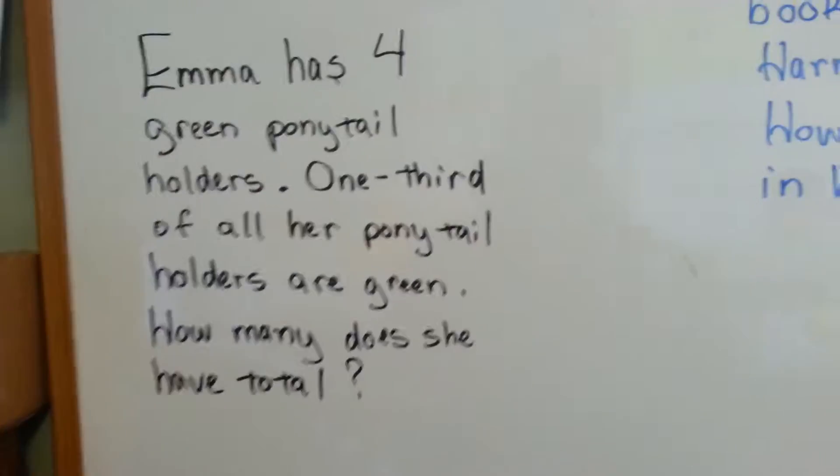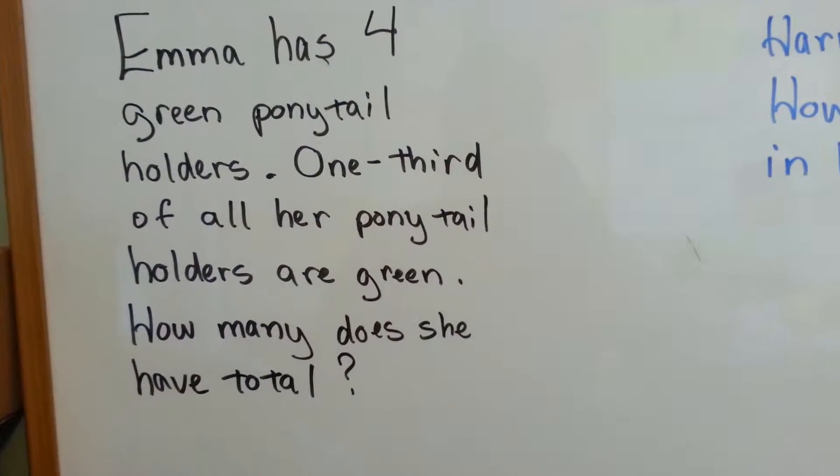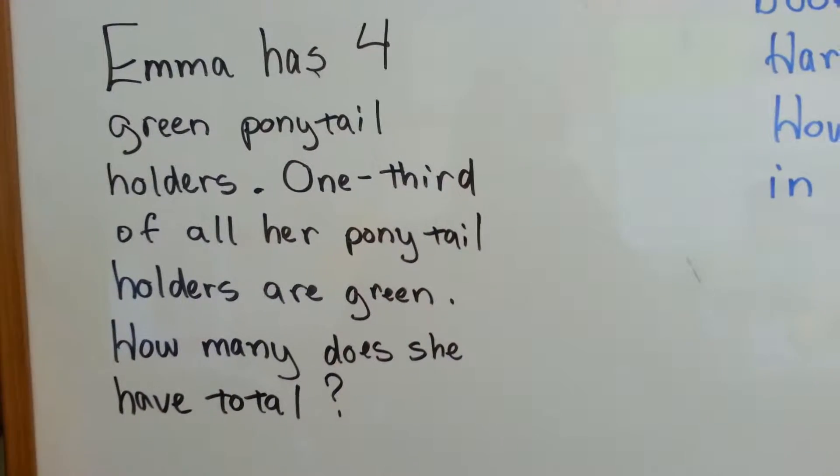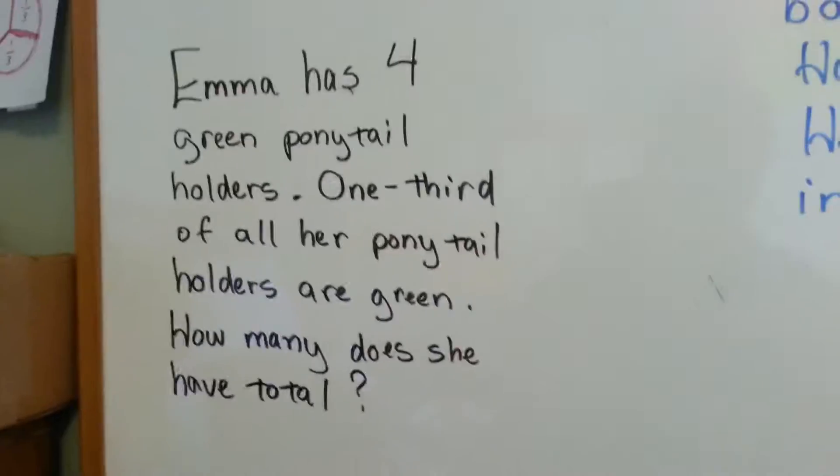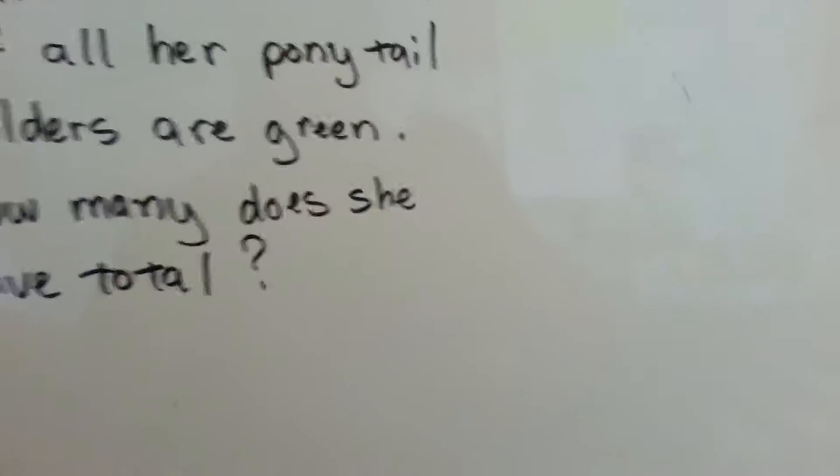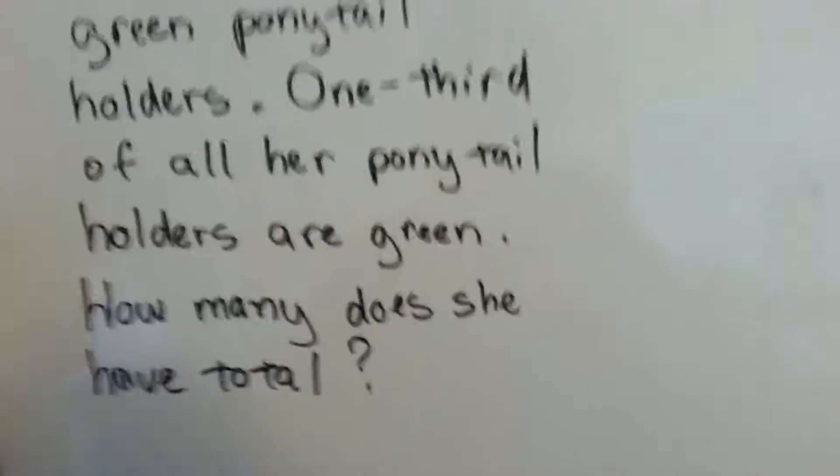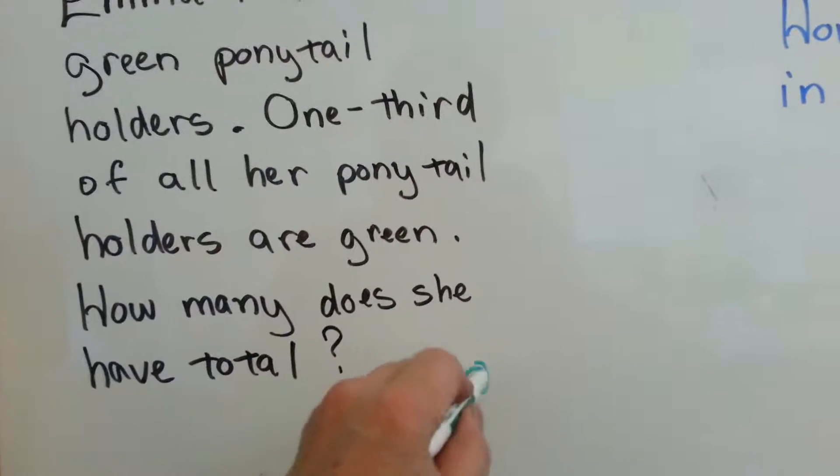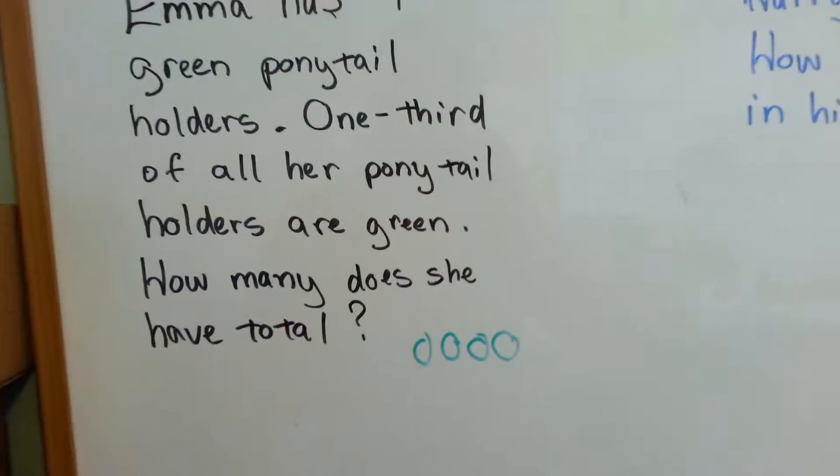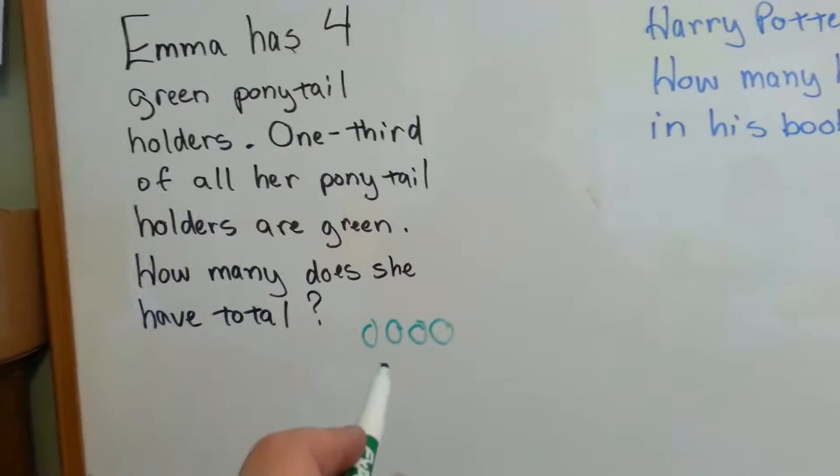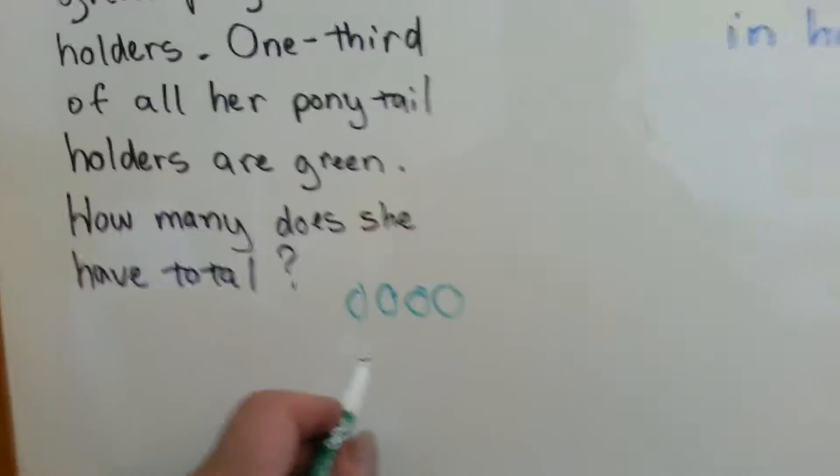The first one we have here is Emma has four green ponytail holders. One third of all her ponytail holders are green. How many does she have total? There's several different ways that we can solve this and one of them is we can draw pictures.